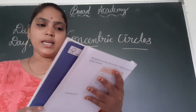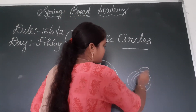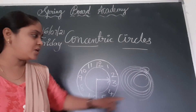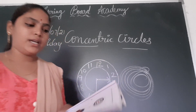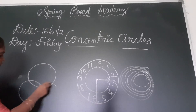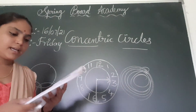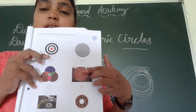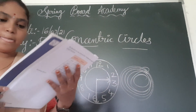Check the second one — the circles are meeting each other, so these are not concentric circles, no need to tick it. The third one — these circles are also not having the same center, so this is also not correct. The fourth one — these are having same center and different radius, so this is a concentric circle — tick it.